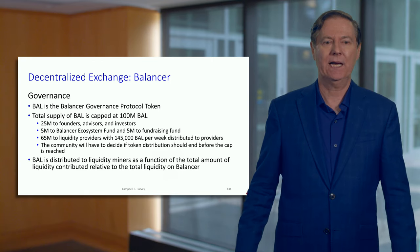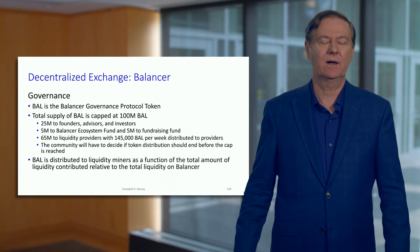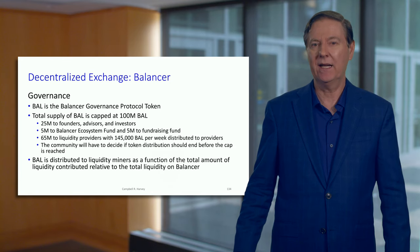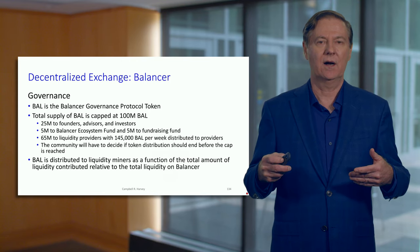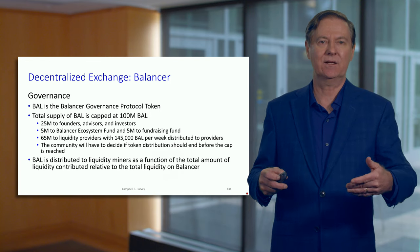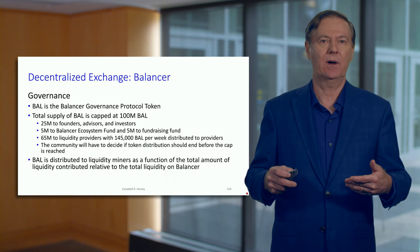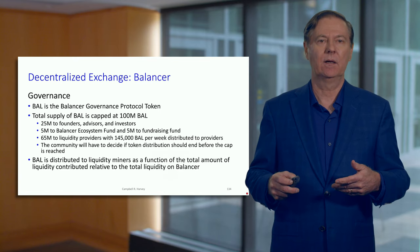Not surprisingly, Balancer also has a governance token — the BAL — and there's a limit to that token. The founders are getting one quarter of the BAL, but a substantial amount — 65% — is allocated to liquidity holders. This is also an incentive mechanism. Like all DeFi protocols, Balancer has the ability to incentivize people to use the protocol, and it does that with the BAL token.